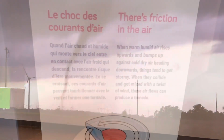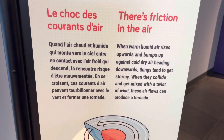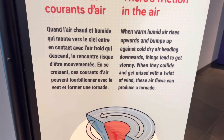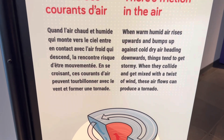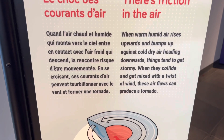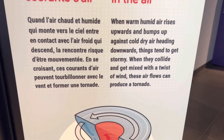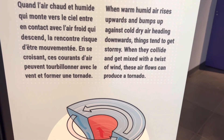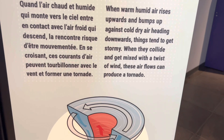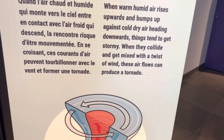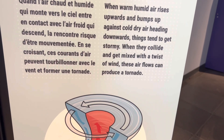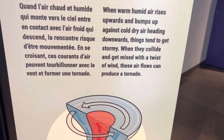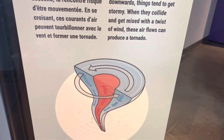And that's all about tornado air. When warm humid air rises upwards and bumps up against cold dry air heading downwards, things tend to get stormy. When they collide and get mixed with a twist of wind, these air flows can produce a tornado.